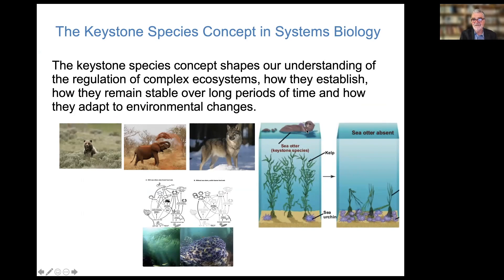Particularly illustrative is the sea otter in the kelp forests of northern California and the west coast. In the presence of this keystone species, the sea otter, there's a healthy kelp forest and a small number of sea urchins, which feed on the kelp. When the sea otter is absent — as it was near extinction 100 years ago — there's an overgrowth of sea urchins and a destruction of the kelp forests.